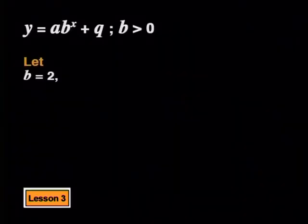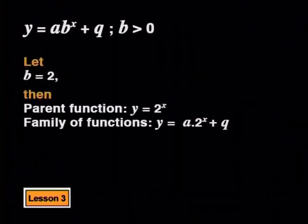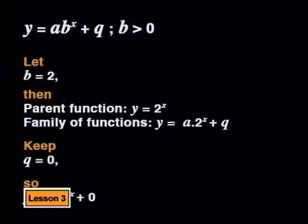First, we need to decide on a b value to use. I'll choose b equal to 2, so the parent function we are working with is y equals 2 to the power of x. We want to see what happens to the graph as we change the a value in the family of functions y equals a·b to the x plus q. So throughout the investigation, we'll keep the q value equal to 0.